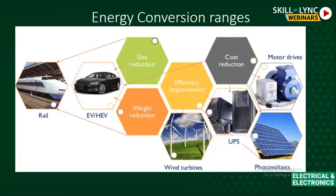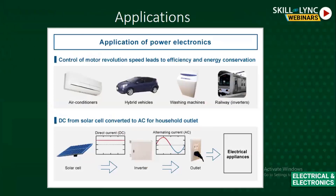In existing power electronic systems, we can achieve cost reduction, efficiency improvement, size reduction, and weight reduction. The scope for improving existing systems is vast. Wherever motor control is needed — air conditioners, hybrid vehicles, washing machines, inverters, railway systems — power electronics plays a role. In solar energy generation, DC is produced by solar cells and an inverter converts DC to AC for use in appliances. Renewable energy is more possible through power electronics and is a must for future applications.